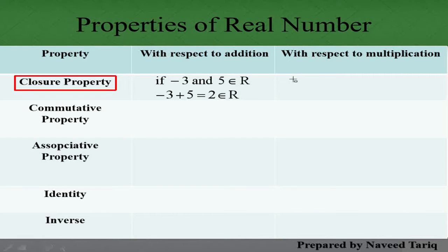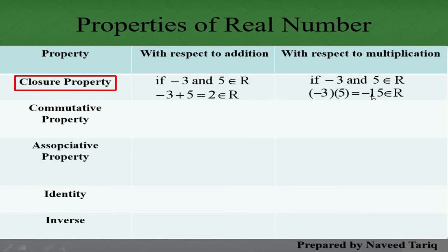اسی طرح multiplication میں بھی Closure Property دیکھیں گے۔ جب ہم multiply کریں گے تو answer بھی ایک real number آئے گا۔ جیسے -3 multiply by 5 equals -15، اور -15 بھی ایک real number ہے۔ تو یہ Closure Property ہے real numbers کی۔